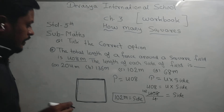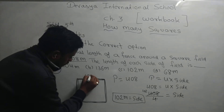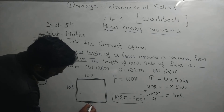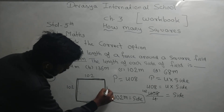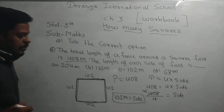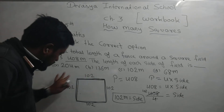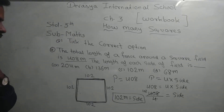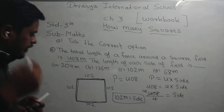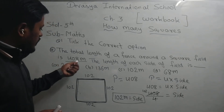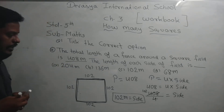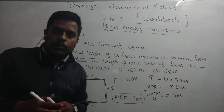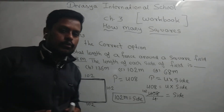So the answer is 102 meters equal to side. Students, when you add this side 4 times, your total will be 408. I hope you have understood this. Clear?